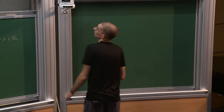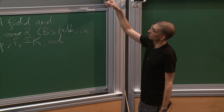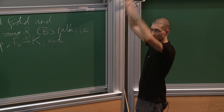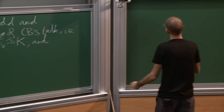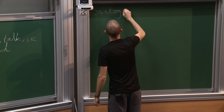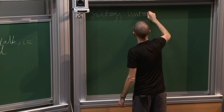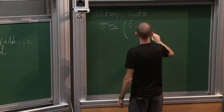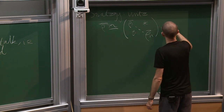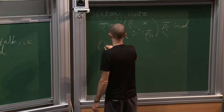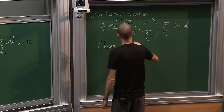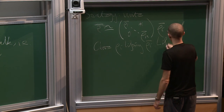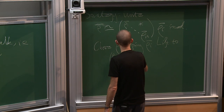The case of an irreducible representation is not much harder than the case of a character, and the case of a character is easy. The natural strategy — employed whenever anyone's tried to solve this problem — is to look at the irreducible subquotients, lift each of them, and then try to lift the extension classes. Concretely: write rho-bar as an iterated extension of irreducible rho_i-bar, choose rho_i lifting rho_i-bar, and then try to lift to the full extension.